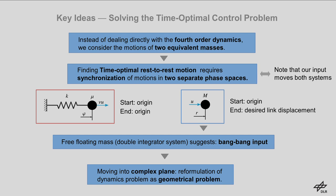From the mathematical point of view, the free-floating mass is nothing but a double integrator system that is subject to a bounded input. The time-optimal control solution to this system is well known and is simply a bang-bang input with a single switching. This suggested that we should look among the class of bang-bang controllers to achieve time-optimal motions for the synchronization problem. Finally, by moving into the complex plane, we can reformulate the problem of finding time-optimal phase-space trajectories into a purely geometric problem.